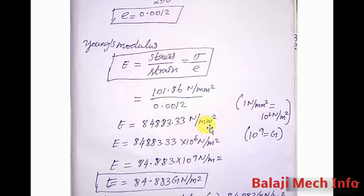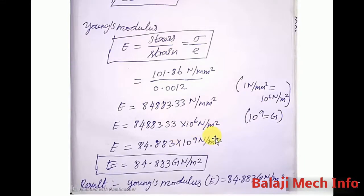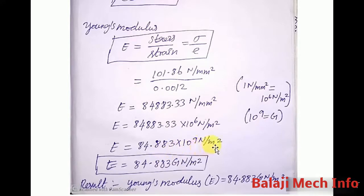Solving: E = 84,883.33 N/mm². Since 1 N/mm² equals 10⁶ N/m², we convert. E = 84,883.33 × 10⁶ N/m². Since 1 Giga = 10⁹, the final answer is E = 84.883 GN/m² (Giga Newton per metre squared).